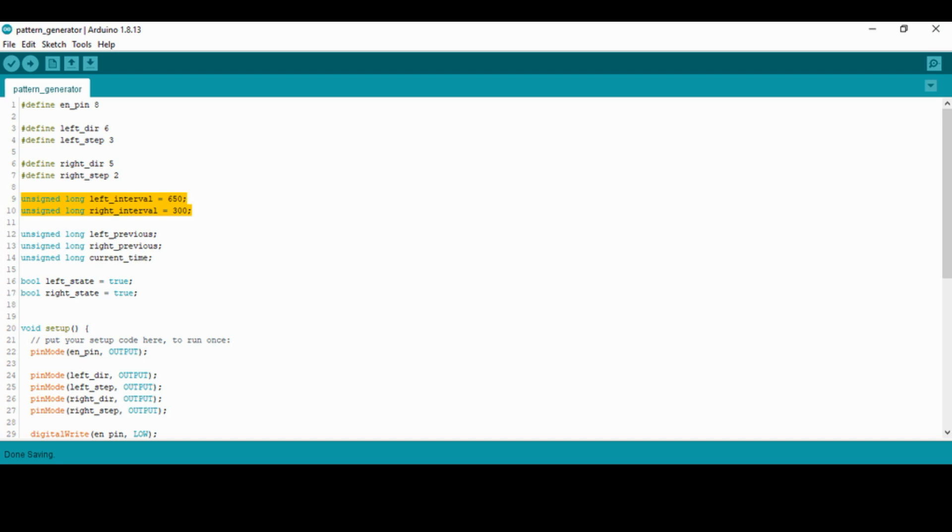To use the program, simply modify the two values on lines 9 and 10 to values of your choice. These values correspond to the delay between consecutive steps taken by the stepper motor and therefore affect the individual speeds of the motors. Once the values are changed, you can upload the program on the Arduino.